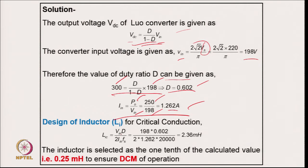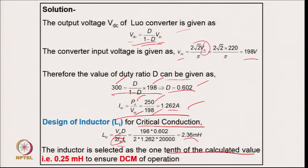Coming to the inductor design for discontinuous mode: for the critical conduction boundary condition, the ripple is allowed to be twice the average inductor current. This gives 2.36 mH. To ensure operation in DCM under all operating conditions, one-tenth of this value is selected: 0.25 mH is chosen to ensure DCM over a wide operating range.